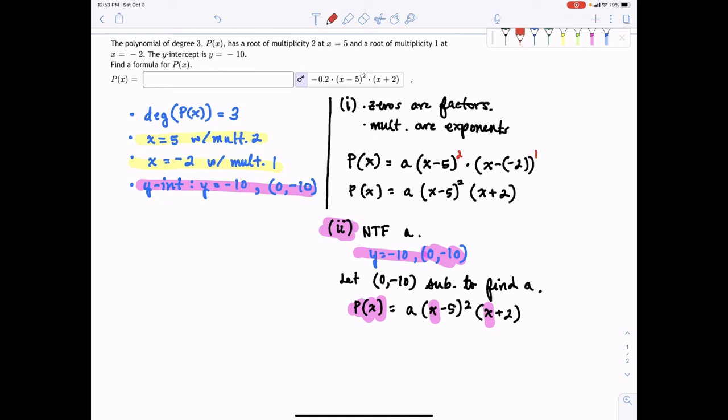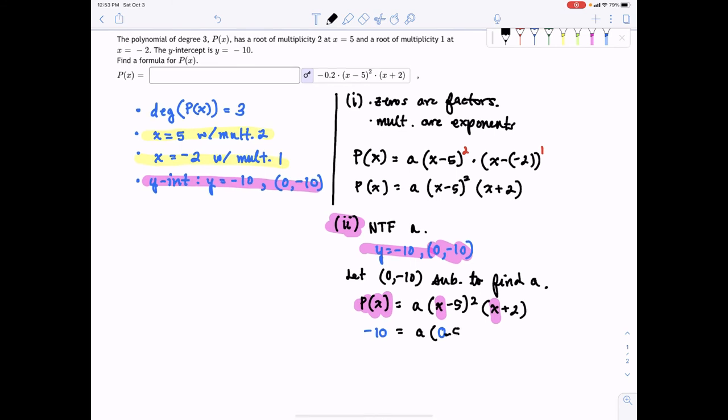So negative 10 will be over here as the y, and then we'll put in 0 for x. So let's go ahead and do that. So we'll have negative 10 equal to a times 0 minus 5 squared times 0 plus 2.